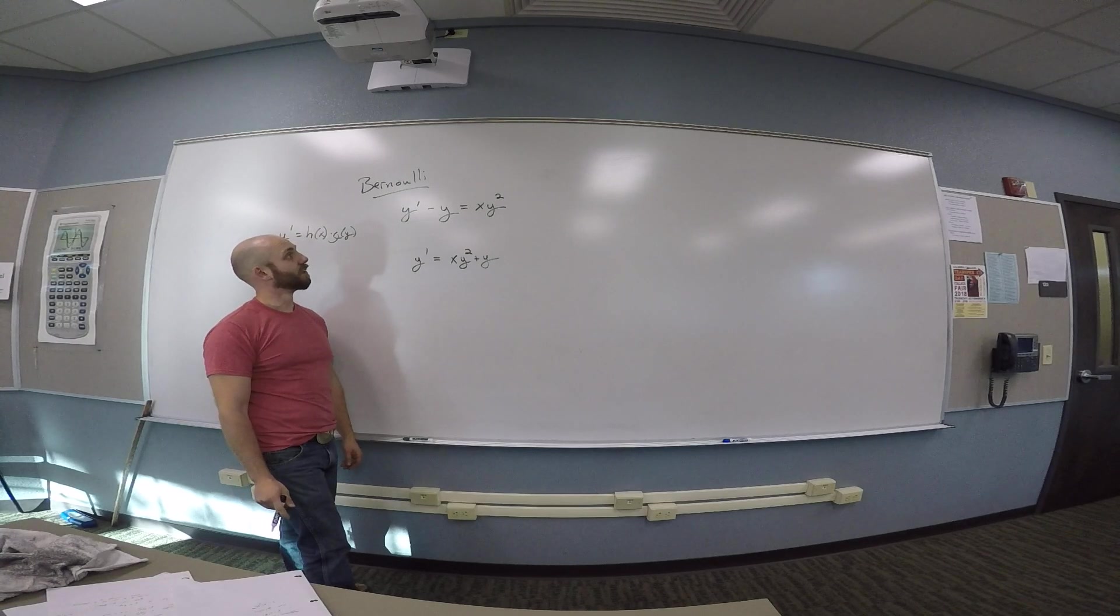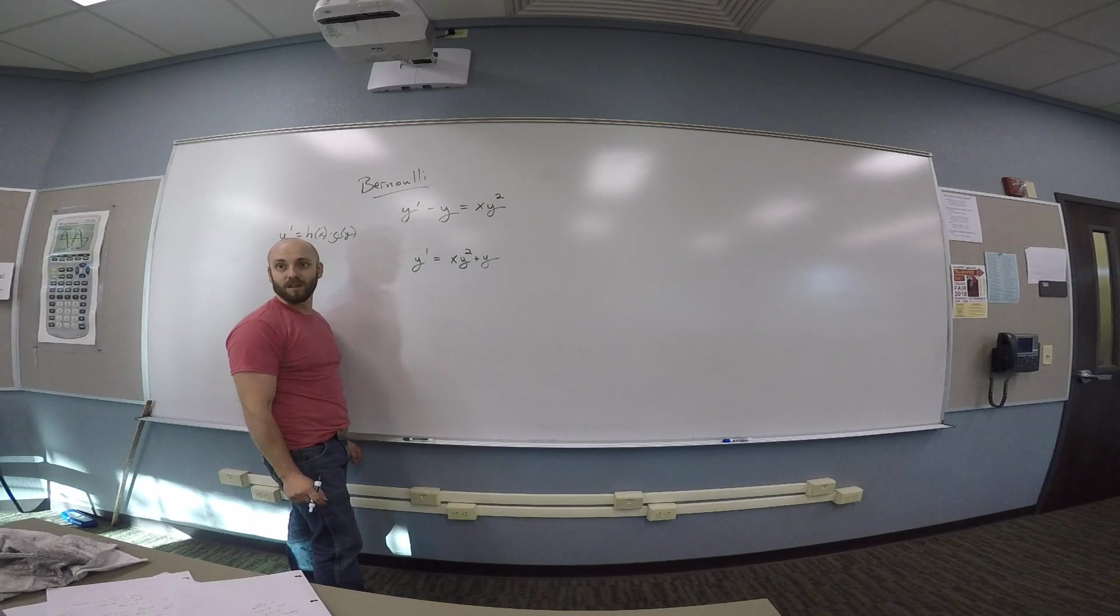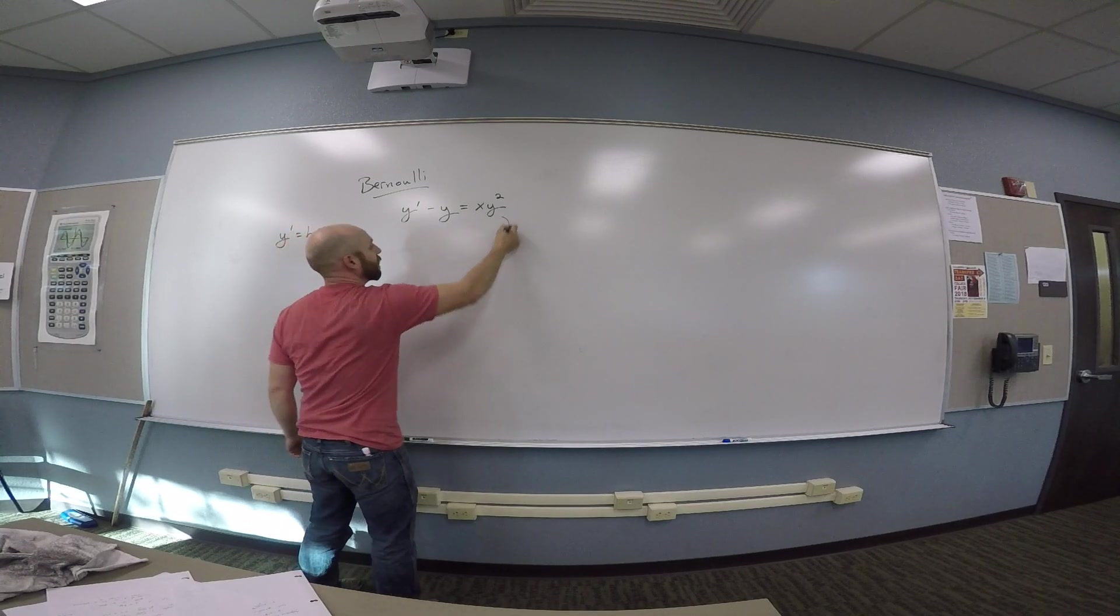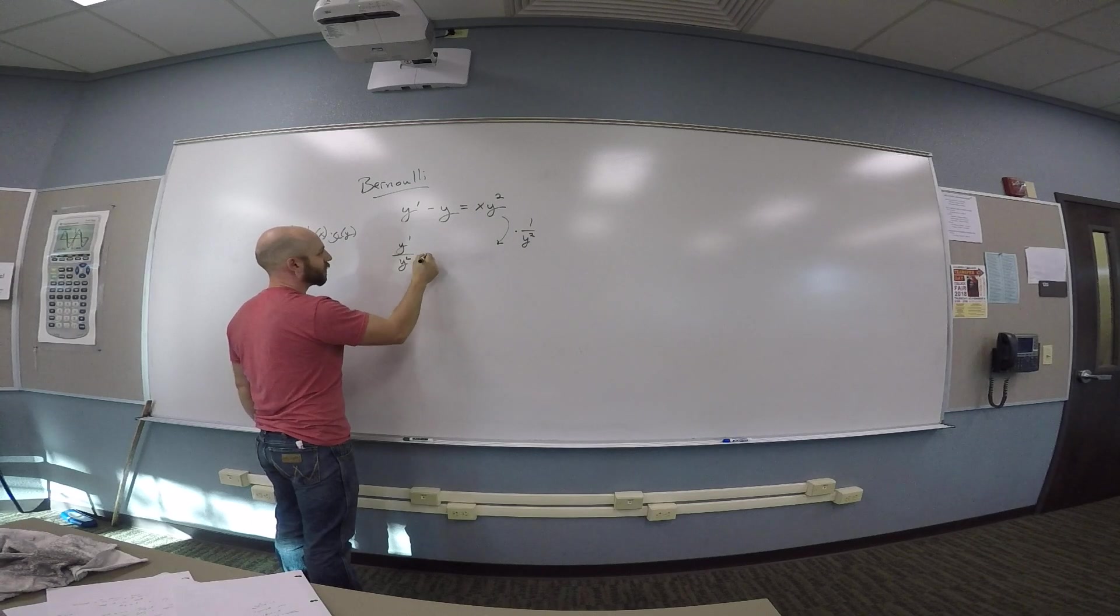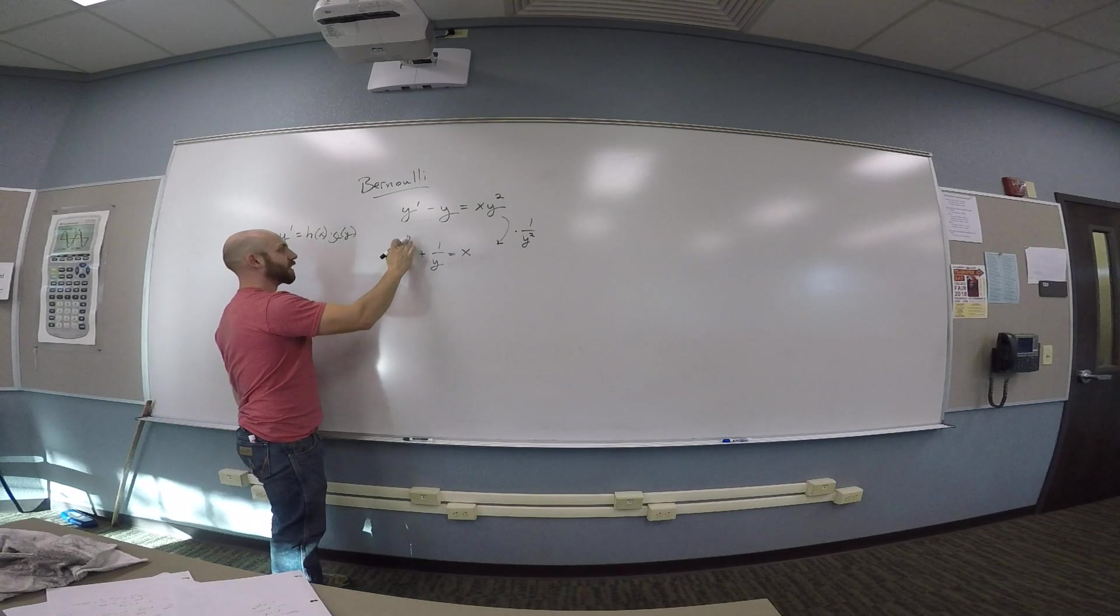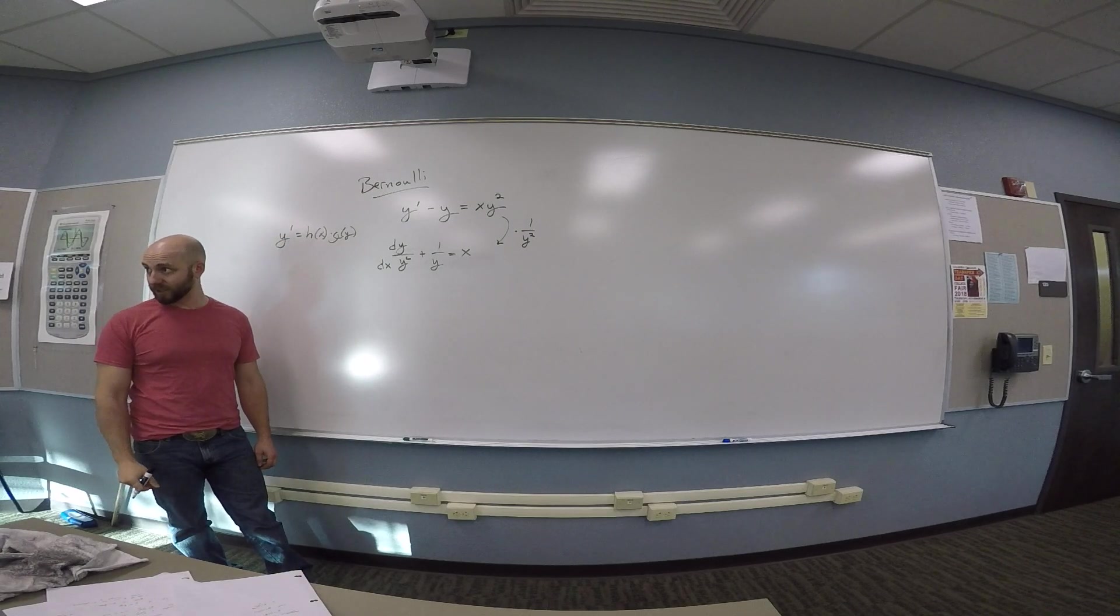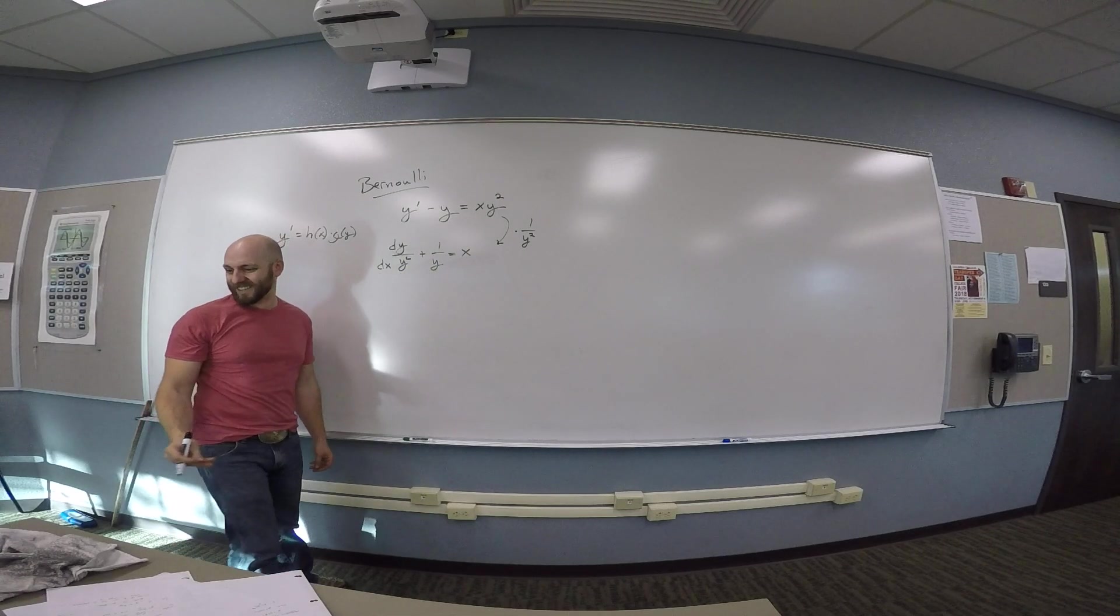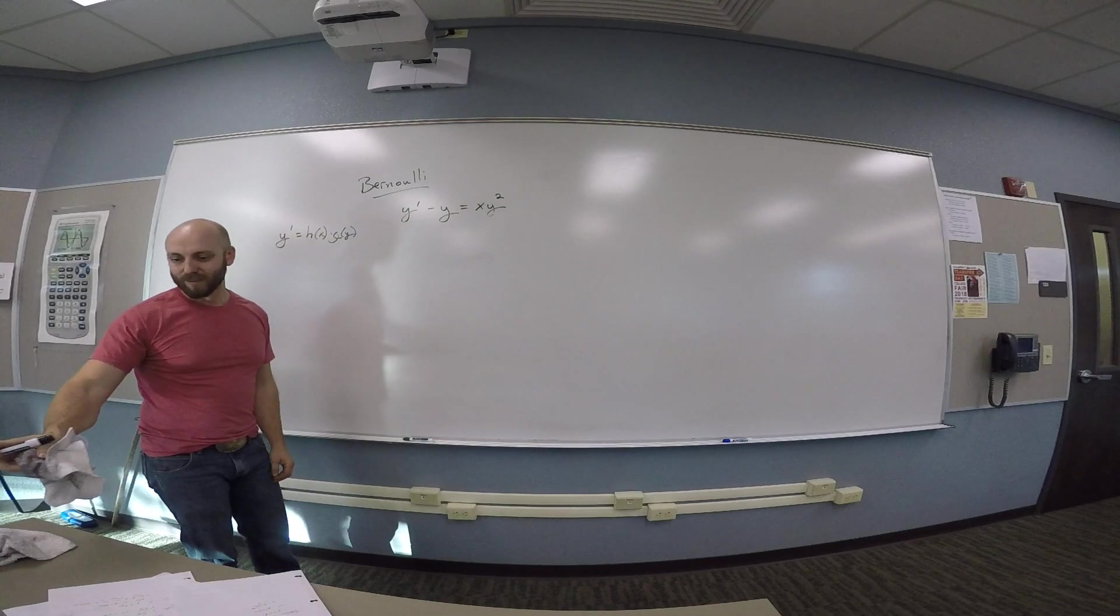But why can't you just divide by y squared and then multiply the dx to the other side? Because it would be y dx on the left side. So you got y prime over y squared plus 1 over y is x. And then you want to rewrite y prime as dy over dx and multiply the dx to the other side. Oh, then you get the dx here, and you're like, what? Yeah, so that's why it needs to look like this to be separable. That makes a lot of sense.